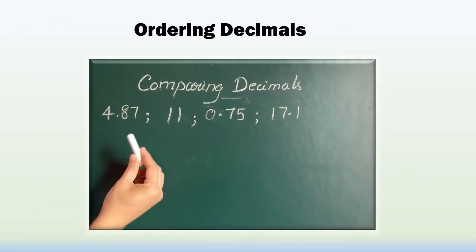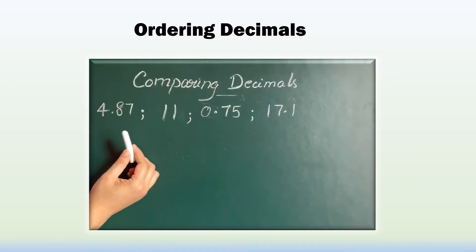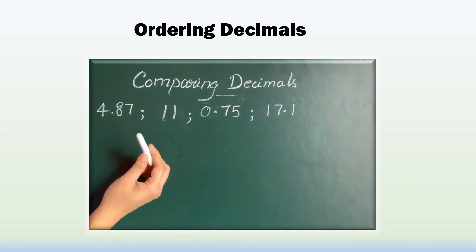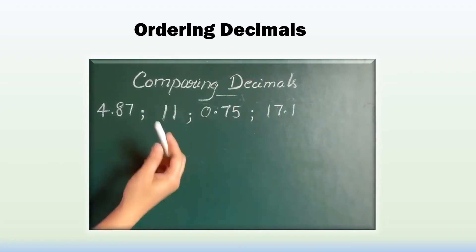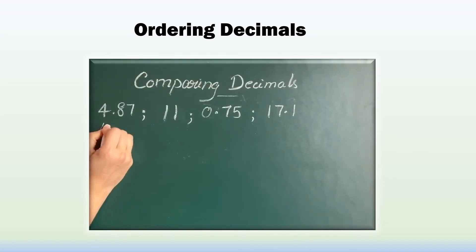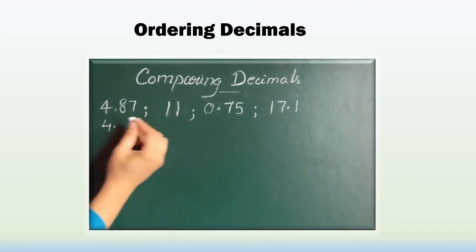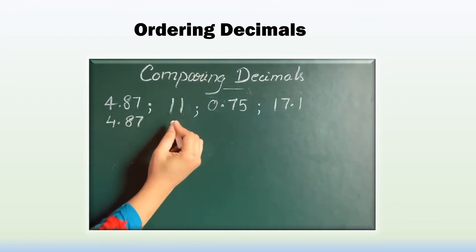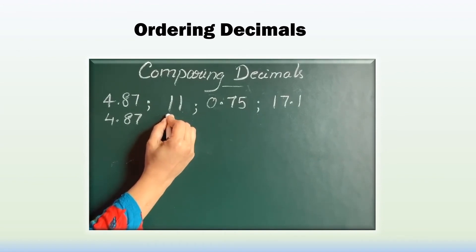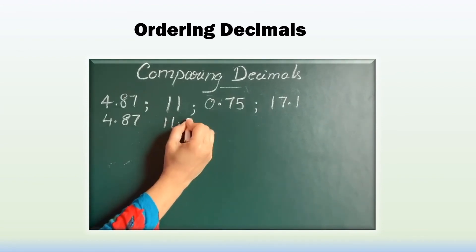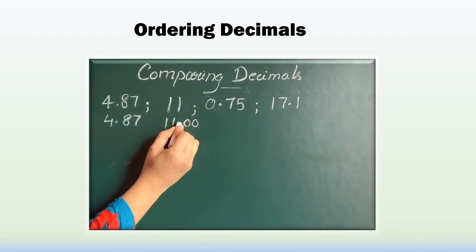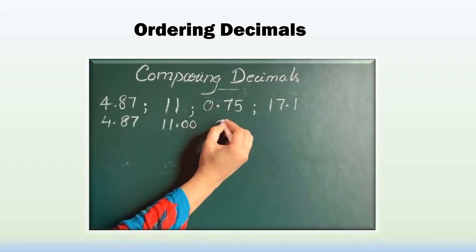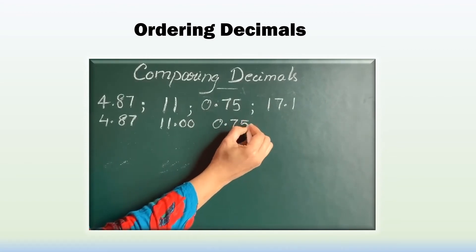Comparing decimals: to compare decimal numbers, first change the unlike decimals to like decimals, then compare. Here they are unlike, so let's change to like decimals — numbers with the same number of decimal places. This number has 2 decimal places. The next number has no decimal place, so change it to 11.00 by adding zeros after the point. The number with 2 decimal places stays as is, and the number with only 1 decimal place gets one zero added.